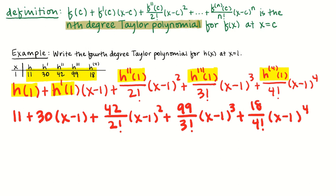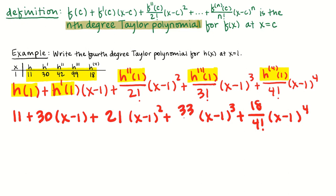I'm going to simplify. I'll take 42 divided by 2 factorial and write that as 21. I'll take 99 over 3 factorial and rewrite that as 33 over 2. And 18 over 4 factorial — since 4 factorial is 24, 18 divided by 24 is 3 over 4. So the simplified fourth degree Taylor polynomial for h at x equals 1 is what I'm going to work with.